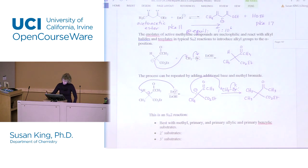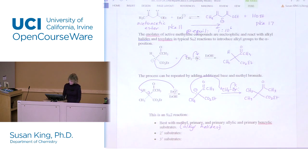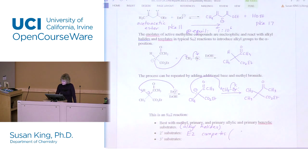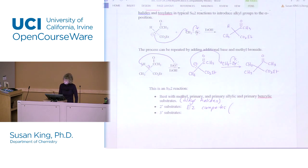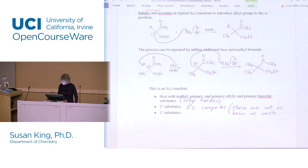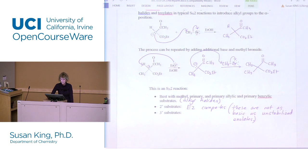This is an SN2 reaction — it's best with methyl, primary, primary allylic, and primary benzylic substrates. I'm referring to the alkyl halides there. Secondary substrates: E2 competes. These are standard SN2 considerations. E2 competes, but these enolates are not as basic as unstabilized enolates.